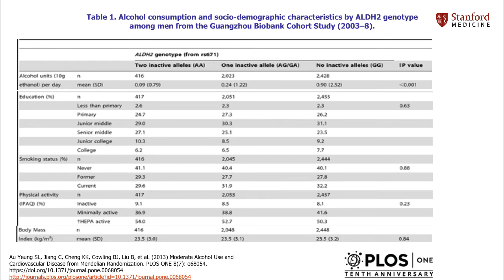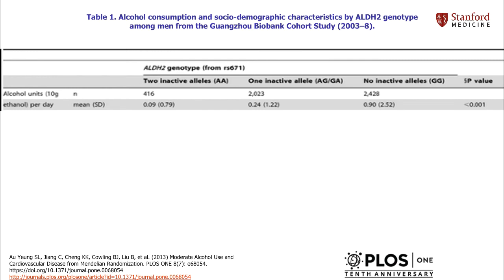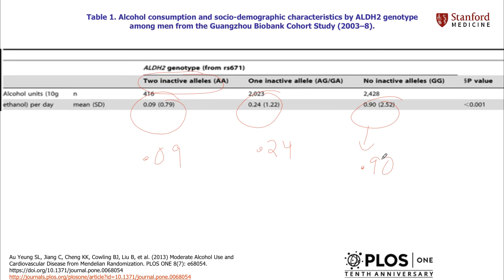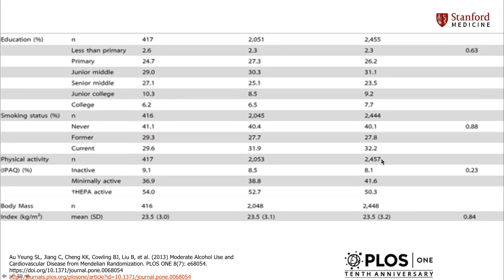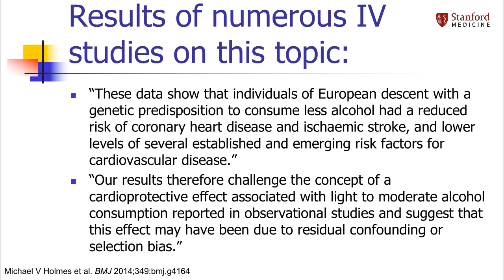This table is from that PLOS1 paper. If we zoom in, you can see that those with two inactive copies of the gene drink only 0.09 standard drinks per day versus 0.24 for those with normal genotypes — a pretty big difference. But if you look in this table, there don't seem to be any other differences between the groups. The groups are very well balanced in education, smoking, exercise, BMI — all the things we can at least measure.